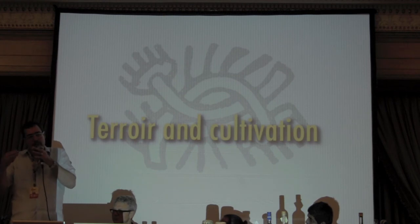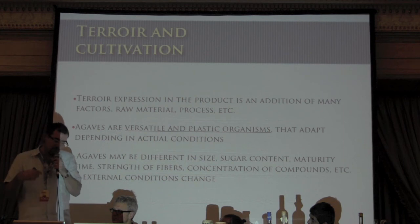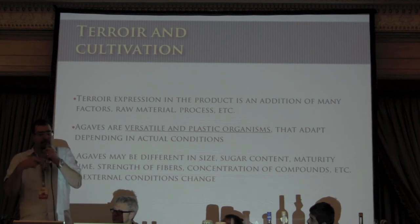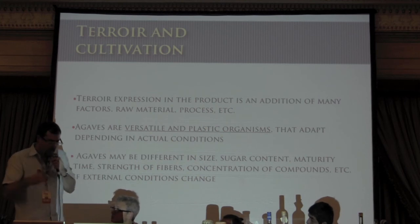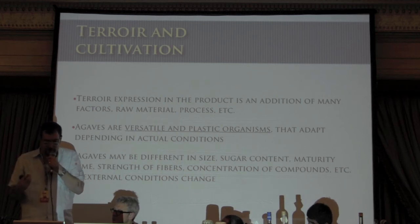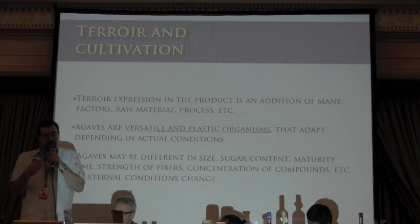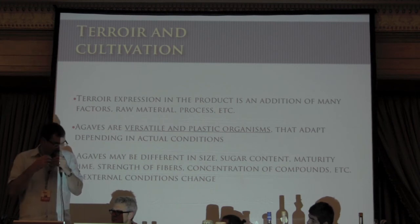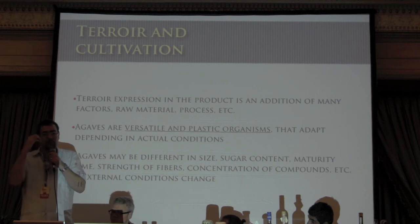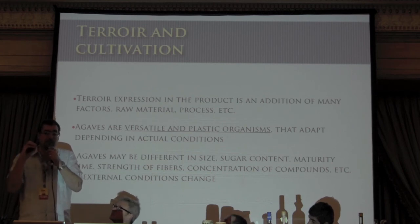Once we understand where the agave comes from and its peculiarities, I want to give some examples of how this information relates to terroir. Terroir and cultivation — the way plants are grown — can have a great effect on how your product tastes. The production process matters greatly as well, but if you use exactly the same production method with agave from different regions, you will get different products.